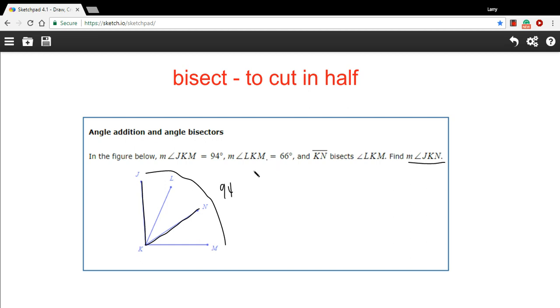And then it says LKM, that's this larger part of this angle, so this chunk right here is 66 degrees. And it says KN bisects LKM. So what you would know then, is that this line right here cuts this angle in half. So we'd have 33 on each side of this.